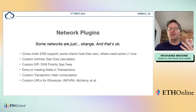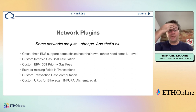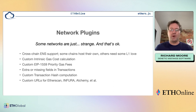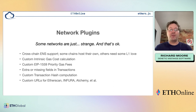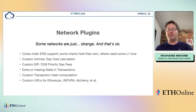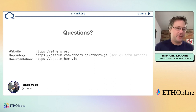Plugins also let you add or override extra fields in transactions, handle chains that compute transaction hashes completely differently, and set custom URLs. For example, Etherscan has a Binance Smart Chain API — the network object can encode that so anyone using BSC with ethers just needs that one network object and the provider knows all the weird exceptions.